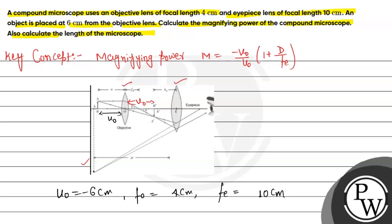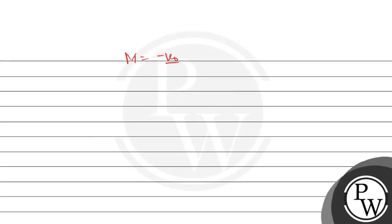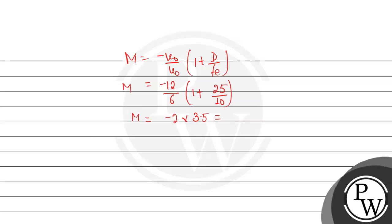This image formed by the objective lens will act as an object for the eye lens. We can now calculate the magnifying power: M equals minus V0 divided by U0 into 1 plus D divided by Fe. Putting in the values: minus 12 divided by 6, multiplied with 1 plus 25 divided by 10. This gives minus 2 into 1 plus 2.5, which is minus 2 into 3.5, giving a magnifying power of minus 7. The negative sign means the image is real and inverted.